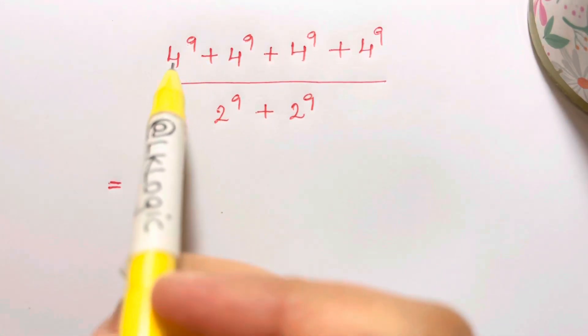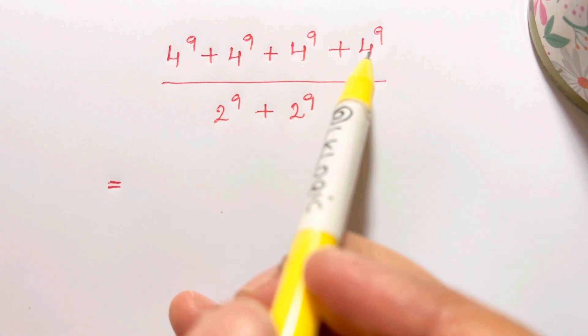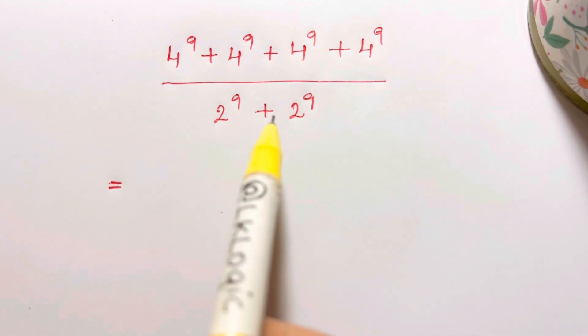Hi guys, I have an amazing question which is 4 to the power of 9 plus 4 to the power of 9 plus 4 to the 9 plus 4 to the 9, over 2 to the 9 plus 2 to the 9. What is this?